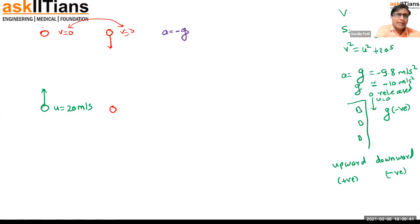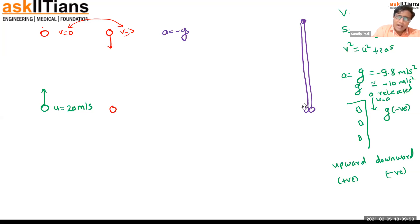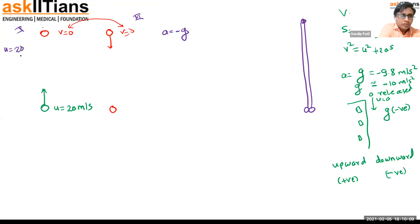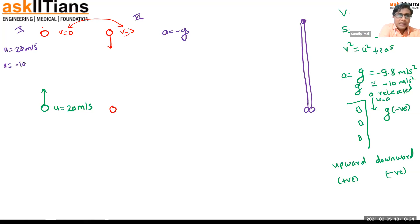Let's split the motion into two parts. Part 1: going up. Here u = +20 m/s, a = −10 m/s², and at the highest point v = 0. Part 2: coming down. We don't yet know the distance covered, but we know the final velocity at the top is zero.